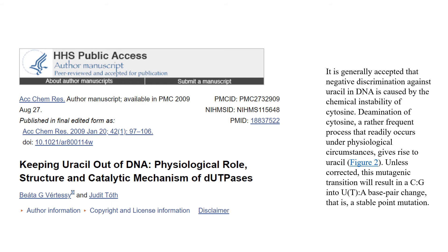These issues come from the chemical literature. Here's a paper for your reference. It is generally accepted that negative discrimination against uracil in DNA is caused by the chemical instability of cytosine. Deamination of cytosine, a rather frequent process that readily occurs under physiological circumstances, gives rise to uracil. And unless corrected, this mutagenic transition will result in a C-G into a U or T-A base pair — that cytosine-guanine would end up getting changed into a uracil-adenine base pair type mutation. So it would not be a good idea to have uracil be part of DNA.